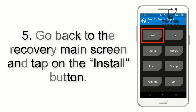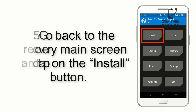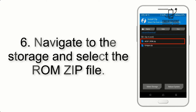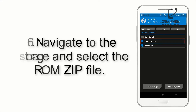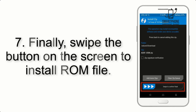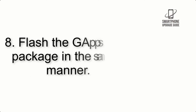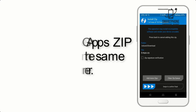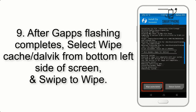Step 5: Go back to the recovery main screen and tap on the Install button. Step 6: Navigate to the storage and select the ROM zip file. Step 7: Swipe the button on the screen to install the ROM file. Step 8: Flash the GApps zip package in the same manner.